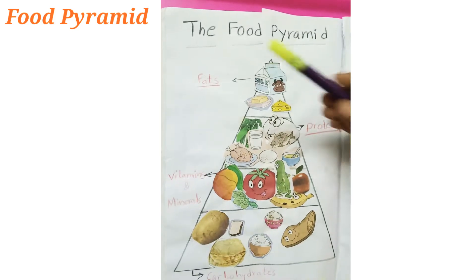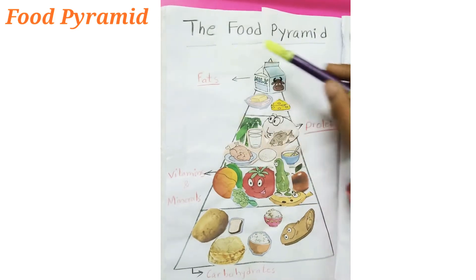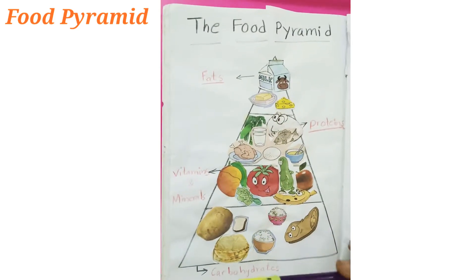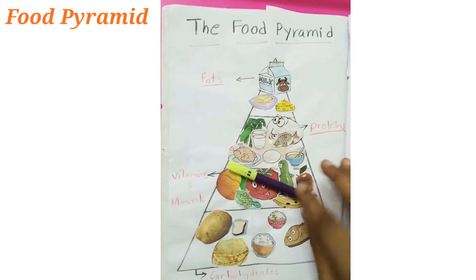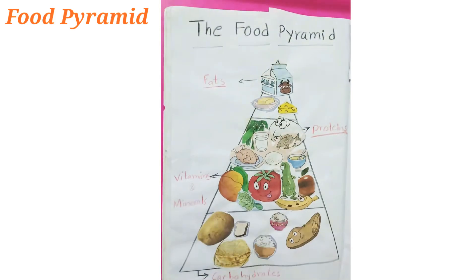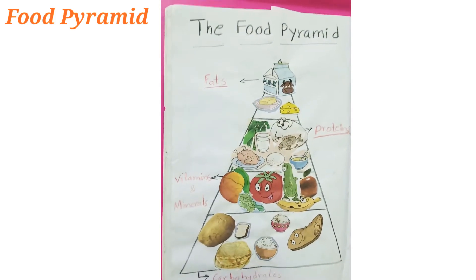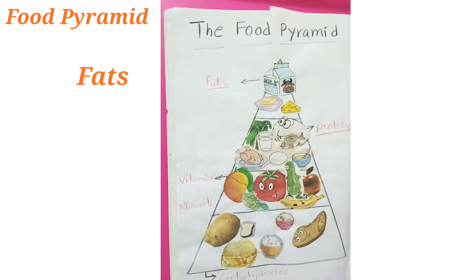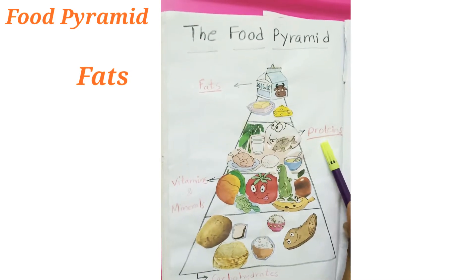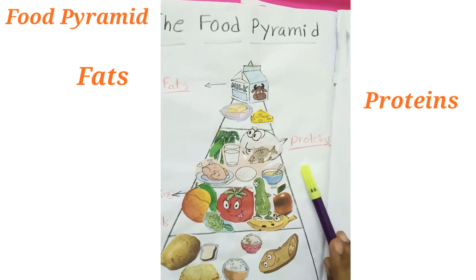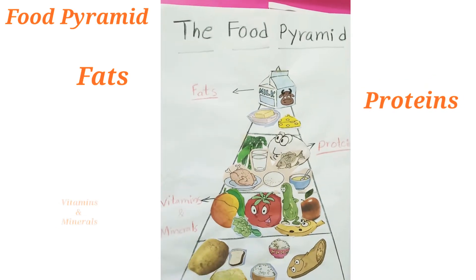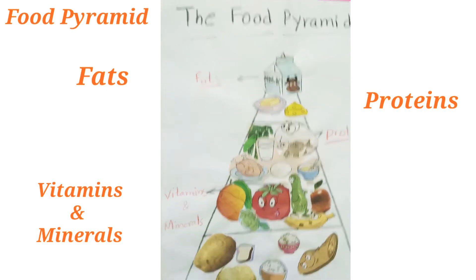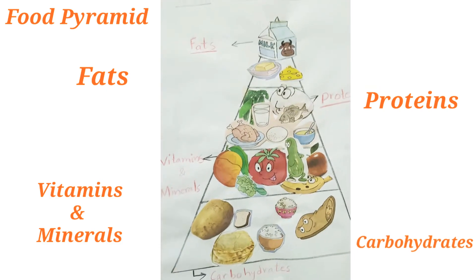Here I am with a new topic called the food pyramid, and our food pyramid is divided into four parts. The first part is fats. The second one is proteins which give us. And the third one is vitamins and minerals. The fourth one is carbohydrates.